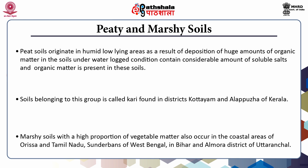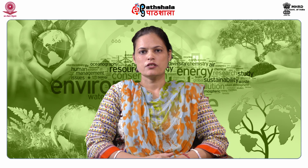Marshy soil with a high proportion of vegetable matter also occurs in the coastal areas of Orissa and Tamil Nadu, Sundarbans of West Bengal, and in Bihar and Almora district of Uttarakhand. The peaty soils are black, heavy and highly acidic. They are deficient in potash and phosphate. Most of the peaty soils are under water during the rainy season, but as soon as rain ceases, they are put under paddy cultivation.